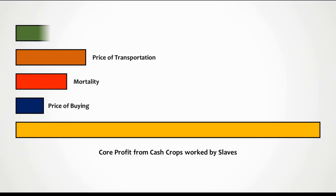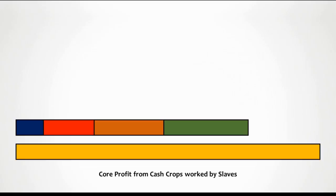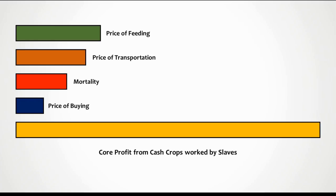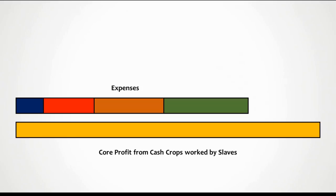And actually there are a lot of costs involved in the slave trade. If we look at the slave trade as a whole, you've got the core profit from cash crops, but then you've also got to buy the slaves — a lot of slaves would die on the way — you have to transport them, pay captains and slavers, and the cost of feeding them. When you add up all these individual costs, quite a lot of the time the core profit from cash crops comes into balance with the expenses, leaving only a rather smaller profit margin than first thought.